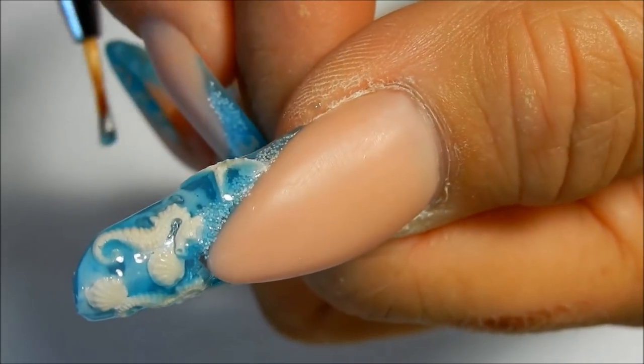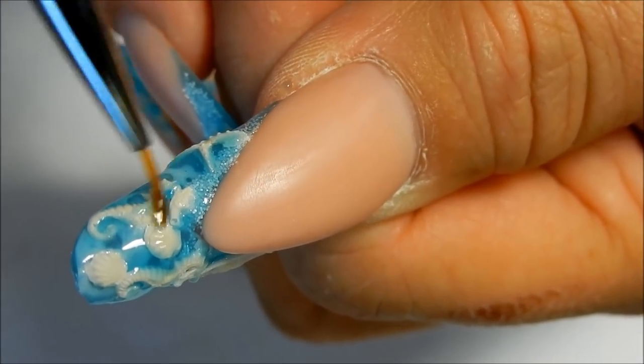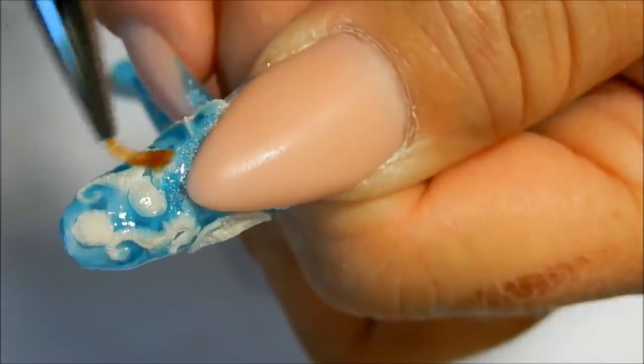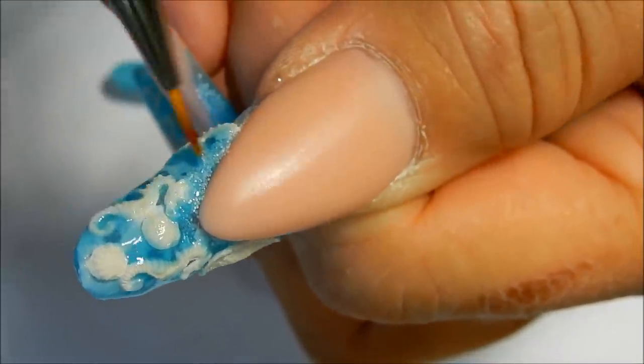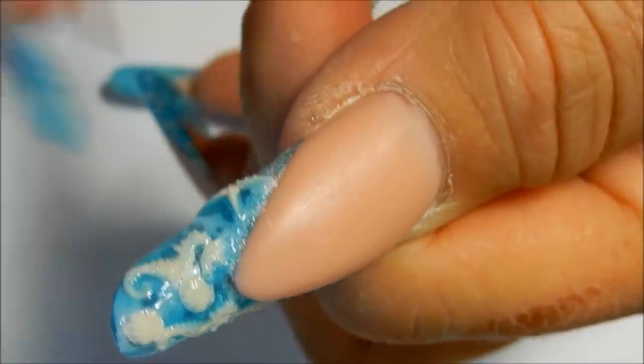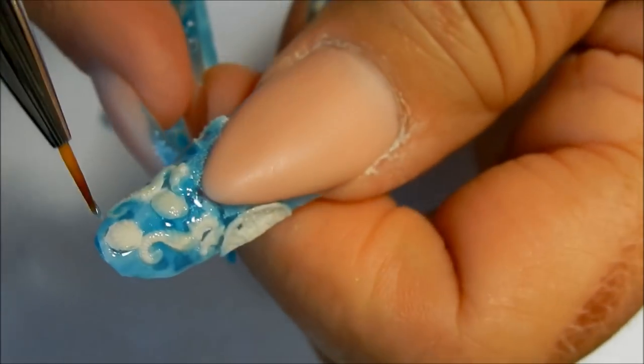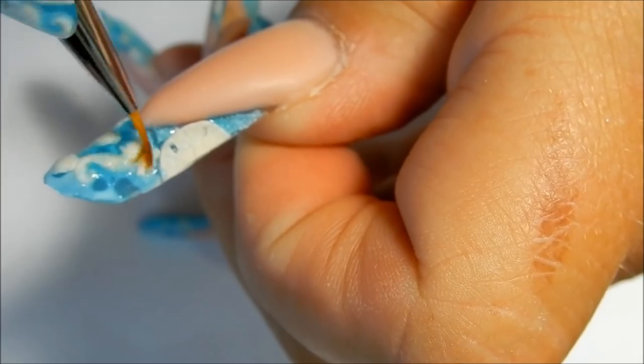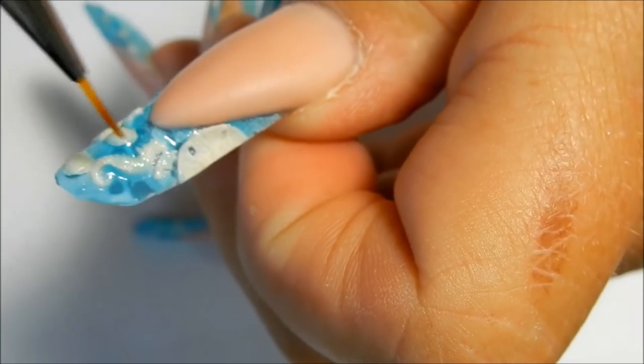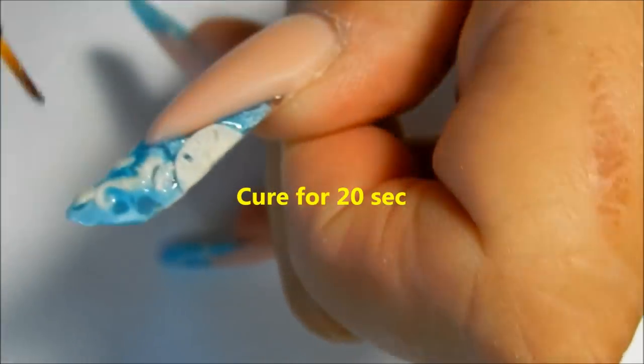I'm just going to take a very little tiny bit of the gel, the transparent blue gel, and just wipe just a tiny little bit over top of the white acrylic pieces. You don't want to lose the look of these pieces inside the nail.